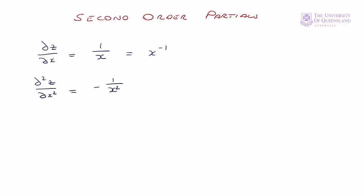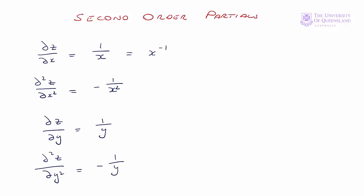Taking the first partial with respect to y, del z del y is equal to 1 on y. Differentiating that again with respect to y gives us del squared z del y squared is equal to minus 1 on y squared.